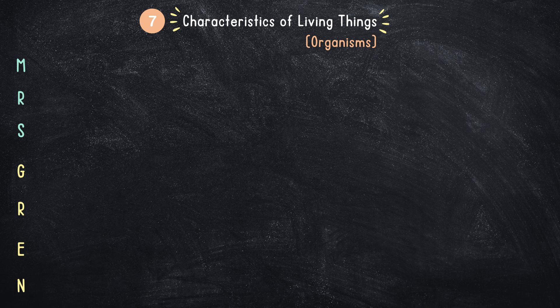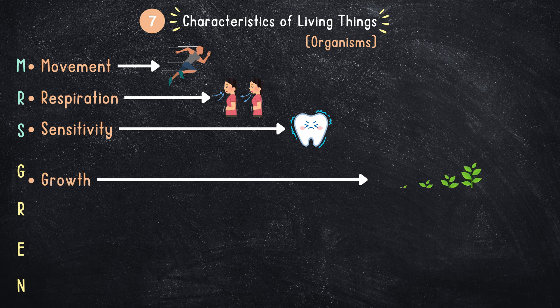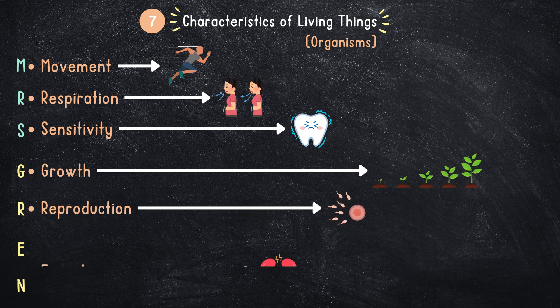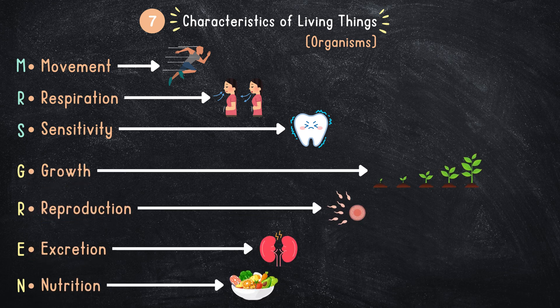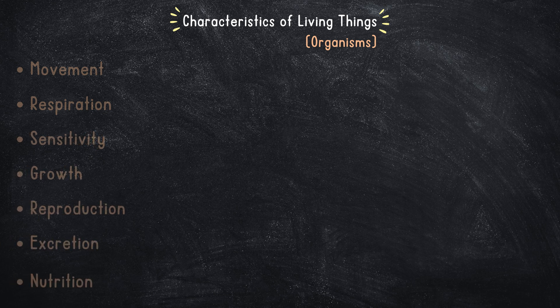These are movement, respiration, sensitivity, growth, reproduction, excretion, and nutrition. Let's look at them one by one.